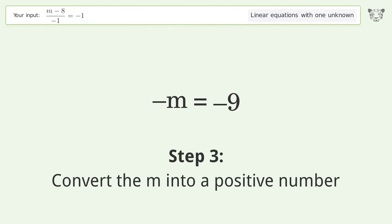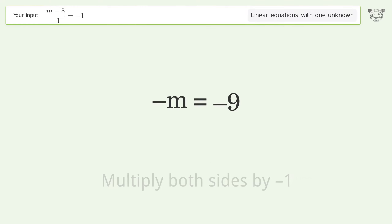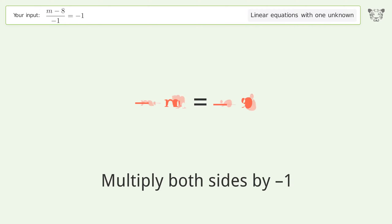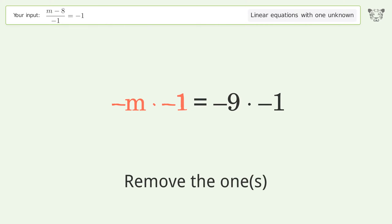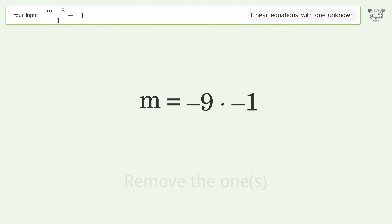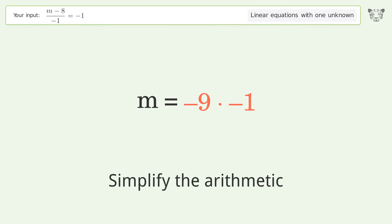Convert m into a positive number by multiplying both sides by negative 1. Remove the ones and simplify the arithmetic.